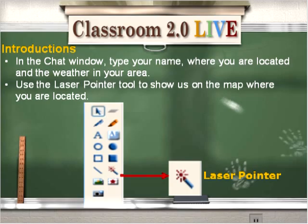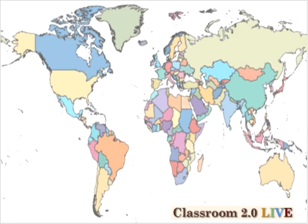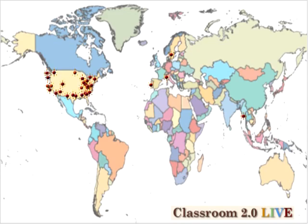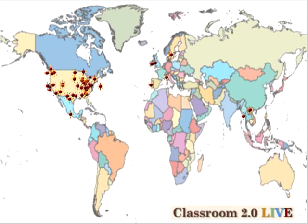Today we're going to be using the laser pointer of the whiteboard tools. The laser pointer is the blue wand with the red kind of starburst at the end. So if everybody now will please click on the starburst, the wand, the laser pointer, and then indicate your location on the world map so that we can see where everybody is from. I'm seeing lots of places in the United States and Canada as well as several places in Europe and that's fantastic. Terry is from the United Kingdom as well as some locations over near Asia. We are so grateful that you've taken your time today on Saturday to join us wherever you are in the world.